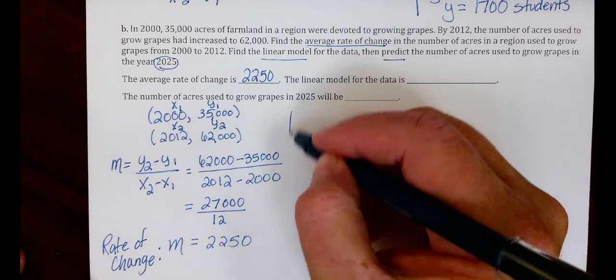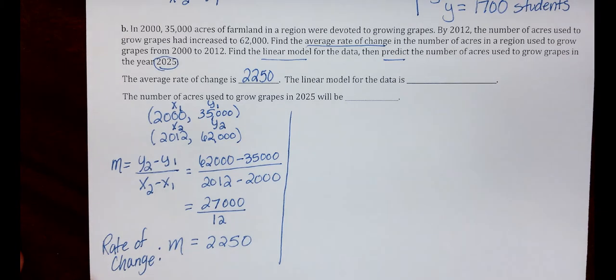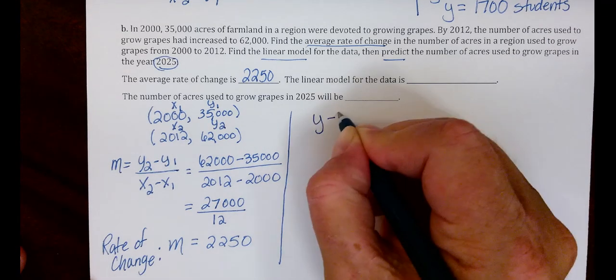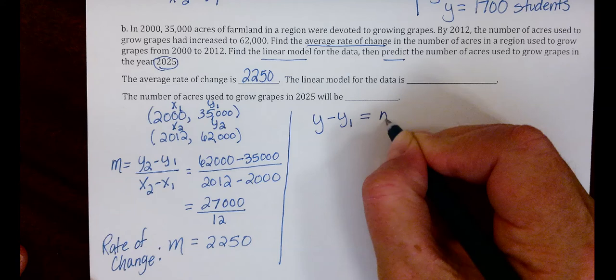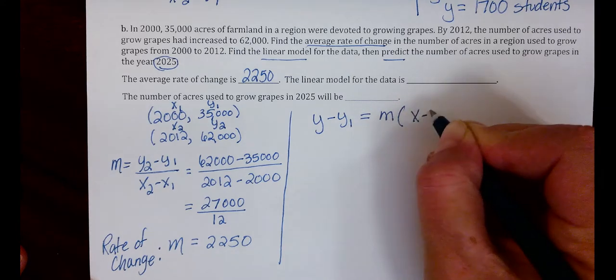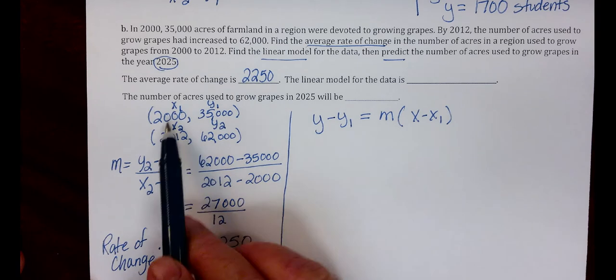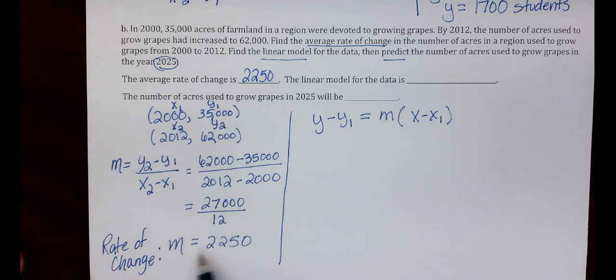Next step is the linear model. This is finding the equation of the line. We do not have our Y-intercept, so we're going to use our point-slope form: Y minus Y1 equals M times X minus X1. We're going to use our point X1, Y1 and our slope of 2,250.